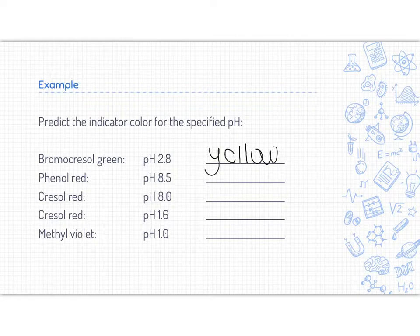Using that same idea, phenol red changes color from 6.6 to 8. Anything less than 6.6 will be yellow. Anything greater than 8 will be red. Now, because 8.5 is obviously greater than 8, our solution will be red.